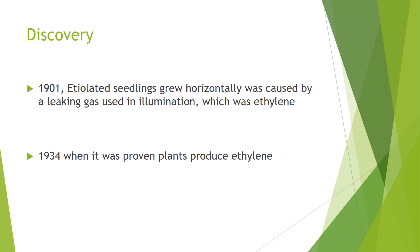Discovery. In the early 20th century, a Russian plant physiologist showed that etiolated seedlings, which have been kept in the dark, grew horizontally as opposed to vertically like they did outside the lab. This was actually due to a leaking gas in the illumination system that was ethylene. It was only until 1934 that it was proven chemically that plants actually produce this ethylene.